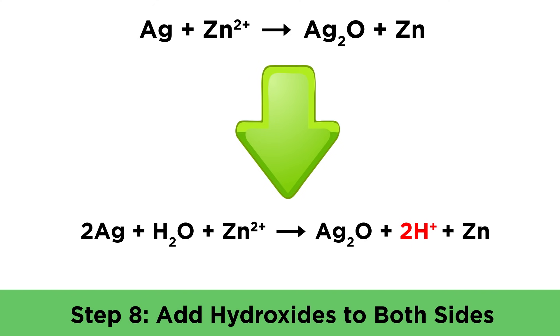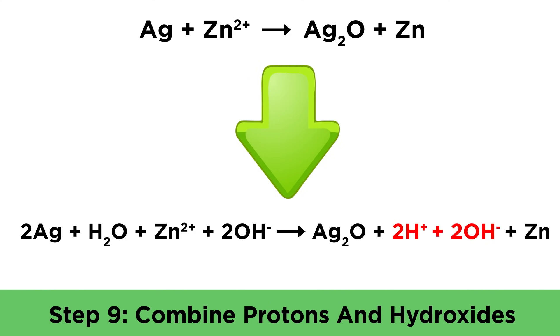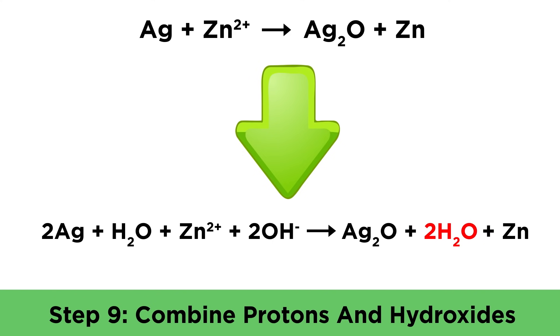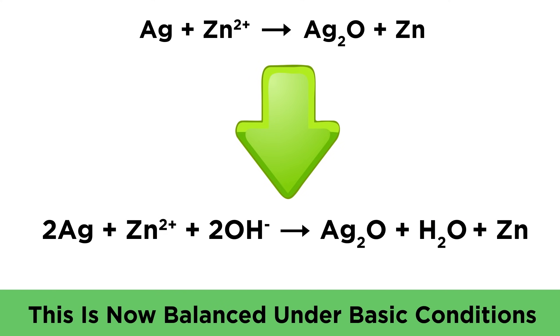First we note how many protons there are, and we add that number of hydroxides to both sides. So that's two hydroxides on each side. Then anywhere we see protons and hydroxides, we can combine these to form water molecules. So that makes two waters on the right. Then we cancel any like terms that remain. In this case we can eliminate one water molecule from both sides. And this will be the balanced redox reaction under basic conditions, with hydroxide listed instead of protons.